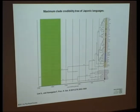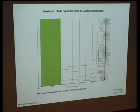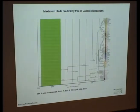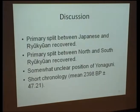This is the tree in Lee and Hasegawa 2011. Looking at the congruities: we do recover the split between the Ryukyuan varieties — shown here in pink and purple — and the Japonic varieties up top in red, orange, yellow, and blue, which is excellent and exactly what we expect to find.